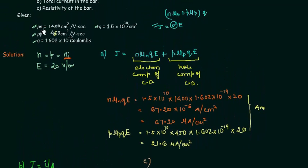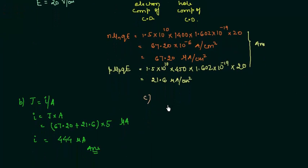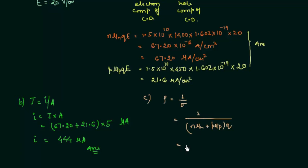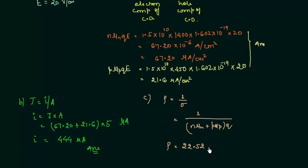Now for the last part, we find the resistivity of the bar. Resistivity rho equals 1 over sigma (conductivity), where 1/sigma equals 1 over (n·mu_n + p·mu_p)·q. The resistivity rho works out to 22.52 x 10 to the power 4 ohm-centimeter. You have p, mu_p, n, and mu_n — just substitute the values and solve using a scientific calculator. That's all for this presentation; any doubts can be asked in the comment section.